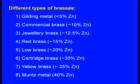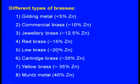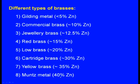Different types of brasses: gilding metal (zinc content less than 5%), commercial brass (zinc approximately 10%), jewelry brass (zinc around 12.5%), red brass (zinc around 15%), low brass (zinc around 20%), cartridge brass (zinc around 30%), yellow brass (zinc around 35%), and munch metal (zinc around 40%).